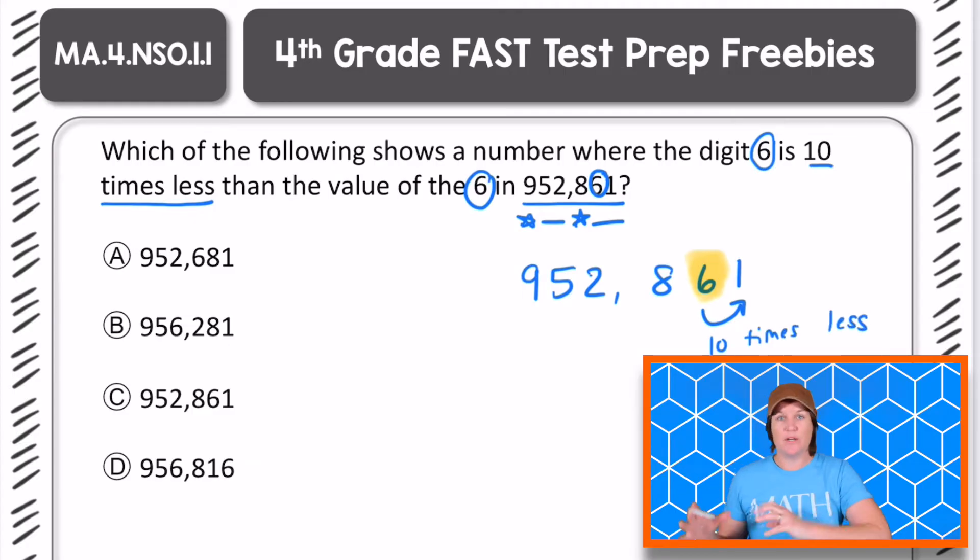And of course, if we wanted to make it 10 times greater, we would go the other way. But this problem is saying which one is 10 times less. So we're looking for the answer choice that has the 6 in the ones place.